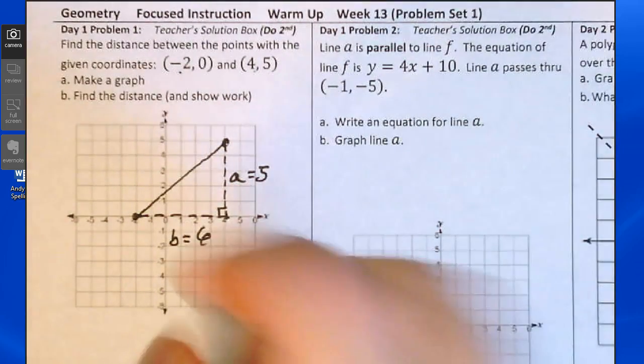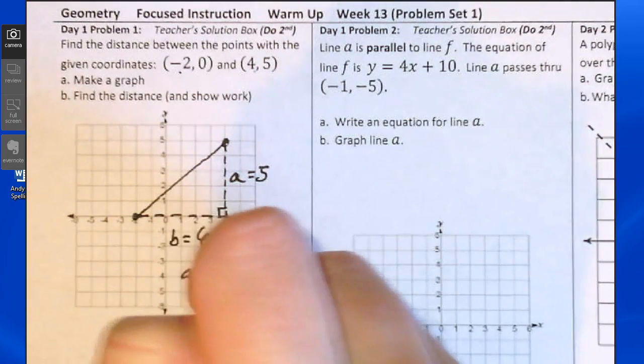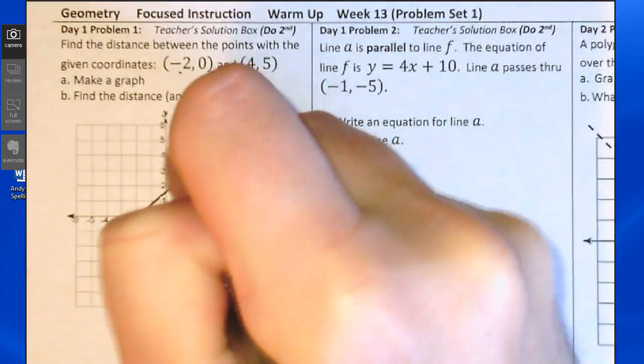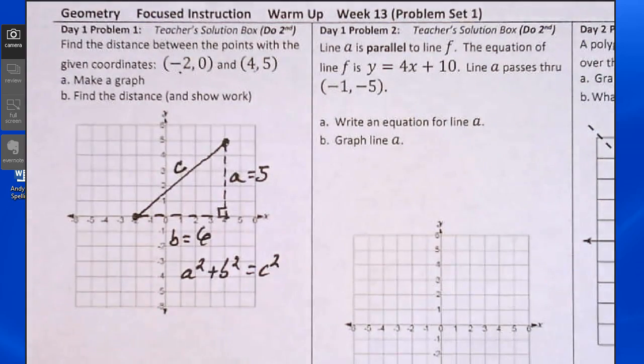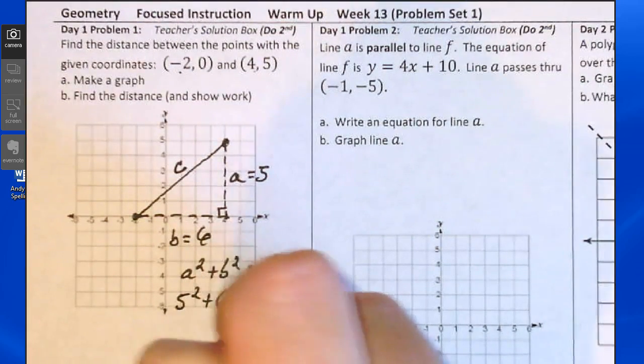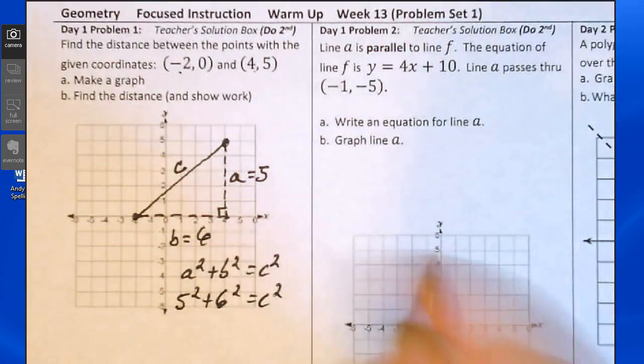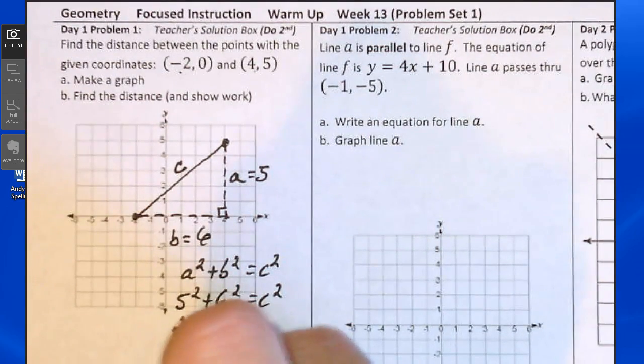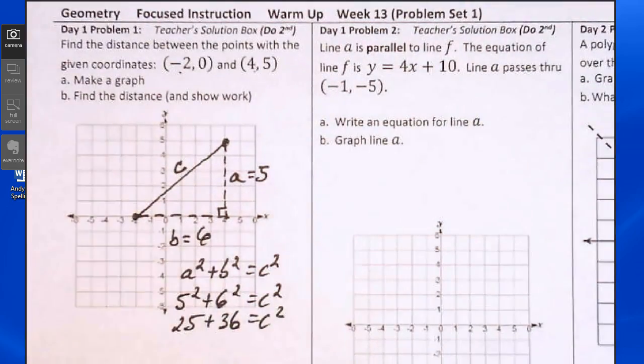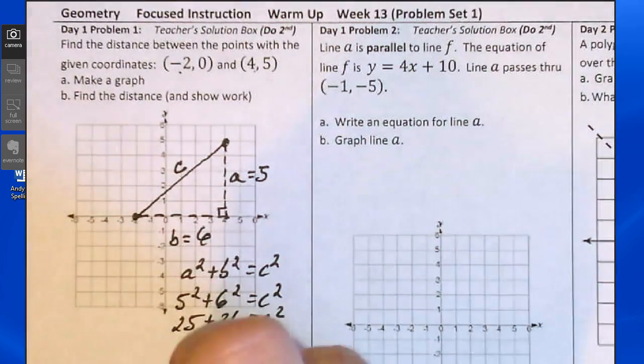Let's use the Pythagorean Theorem. a squared plus b squared equals c squared, where the letter c is that diagonal distance that we want to figure out. Substitute 5 for a and 6 for b. 5 squared is 25. 6 squared is 36. 25 plus 36 is 61.